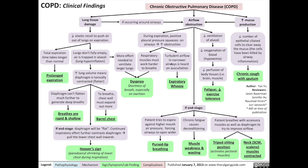Turbulent airflow in narrower airways can be audible on auscultation, especially on expiration, which gives COPD patients their classic expiratory wheeze. Airflow obstruction also reduces ventilation of the alveoli, which reduces oxygenation of the blood, and reduces the ability of the blood to perfuse body tissues like the brain and muscle with necessary oxygen — resulting in COPD patients having fatigue and reduced exercise tolerance.